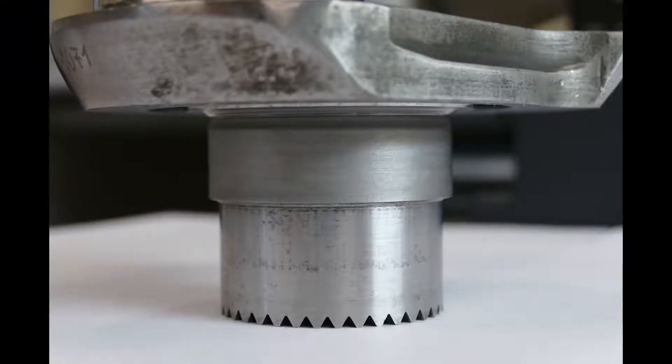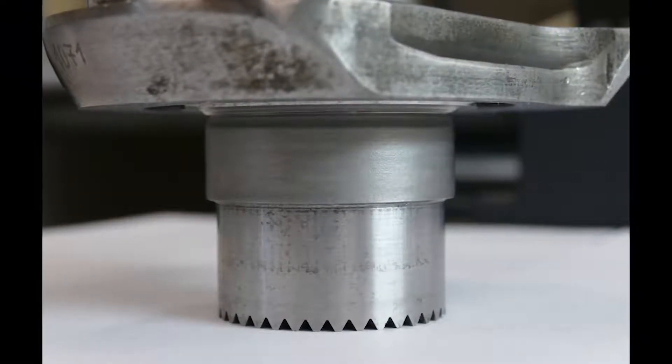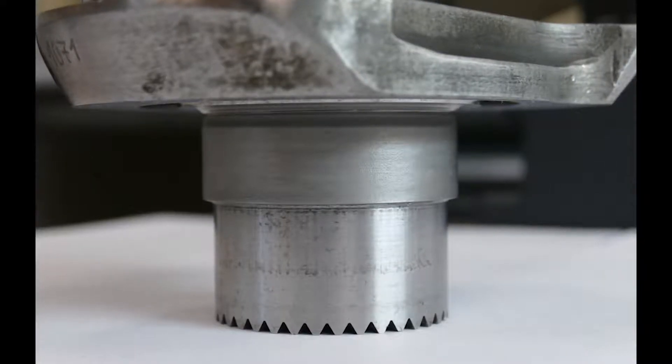After the three minute coating process, the bearing surface is finished ground to the original dimension and ready to be reassembled into the crankshaft.